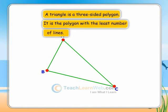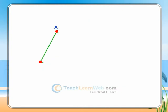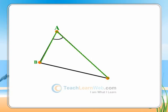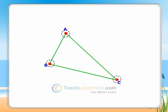The three sides of the triangle are AB, BC, and CA. The three angles are BAC, BCA, and ABC. The points A, B, and C are called the vertices of the triangle.